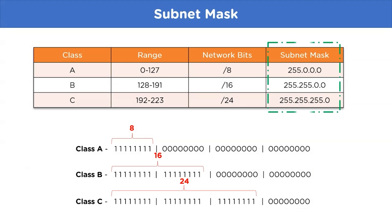Let's see the default subnet mask for each class. For Class A we have 255.0.0.0. For Class B we have 255.255.0.0. For Class C we have 255.255.255.0.